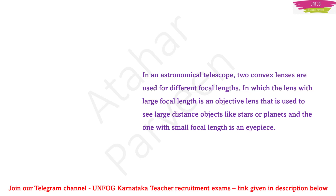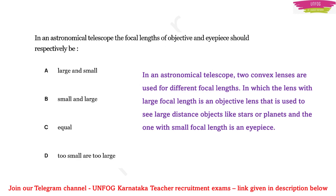Based on this concept, many types of questions can be asked. For example: In an astronomical telescope, the focal lengths of the objective and eyepiece should respectively be — large and small, small and large, equal, too small, or too large.